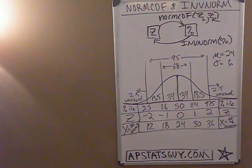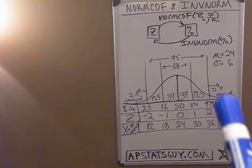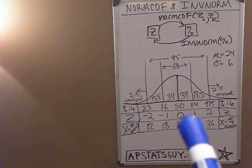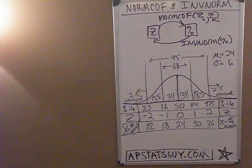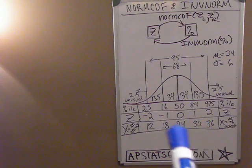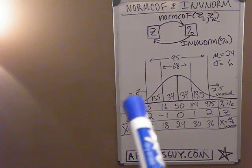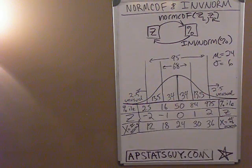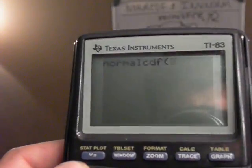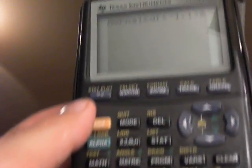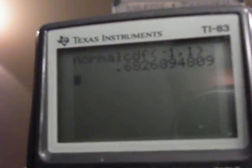Let's try it. If I put in negative one and one, what percent should come out? We know 68% of the data is between a Z-score of negative one and one. Remember, Z-score is just the number of standard deviations away from the mean. The area under the whole curve is one, so this should be 0.68. I enter normcdf(-1, 1) — make sure you use the negative sign at the bottom. And enter — bingo, 68%!